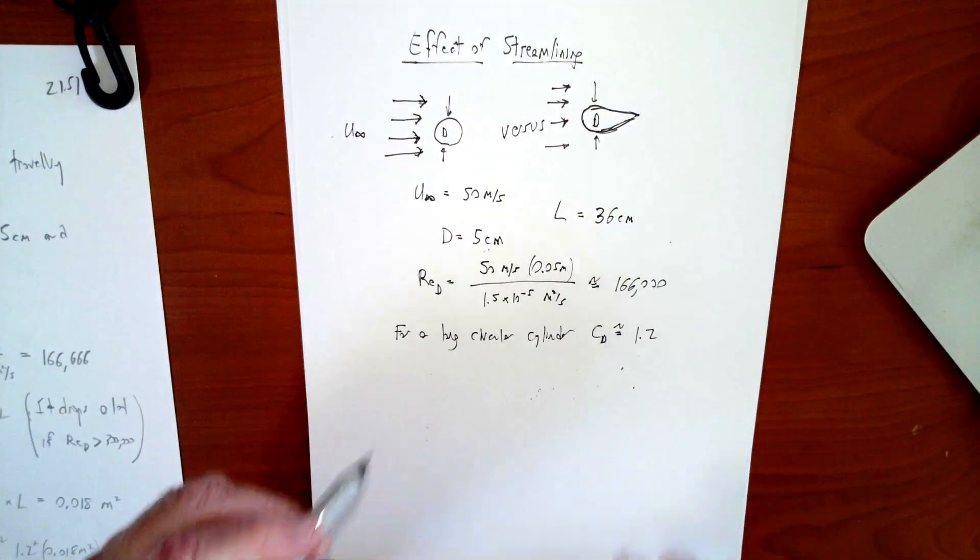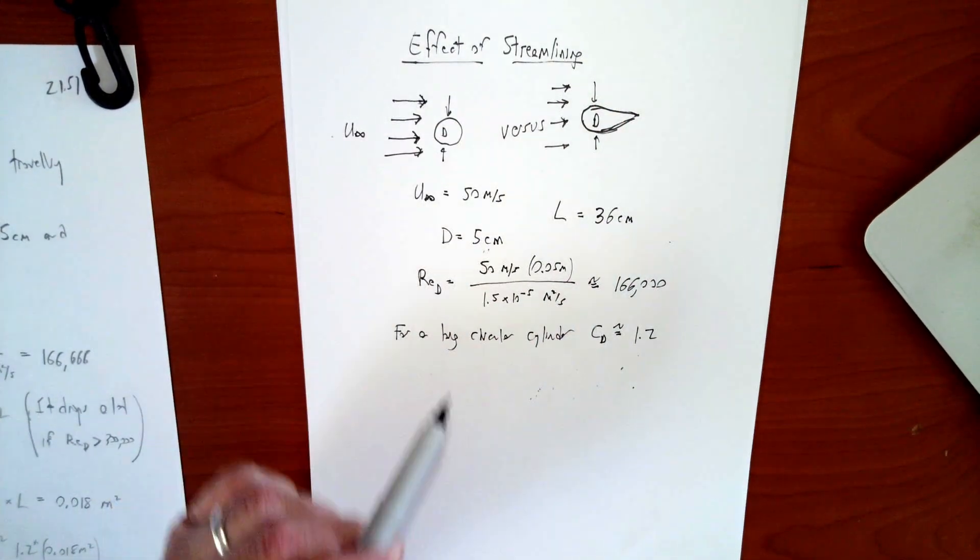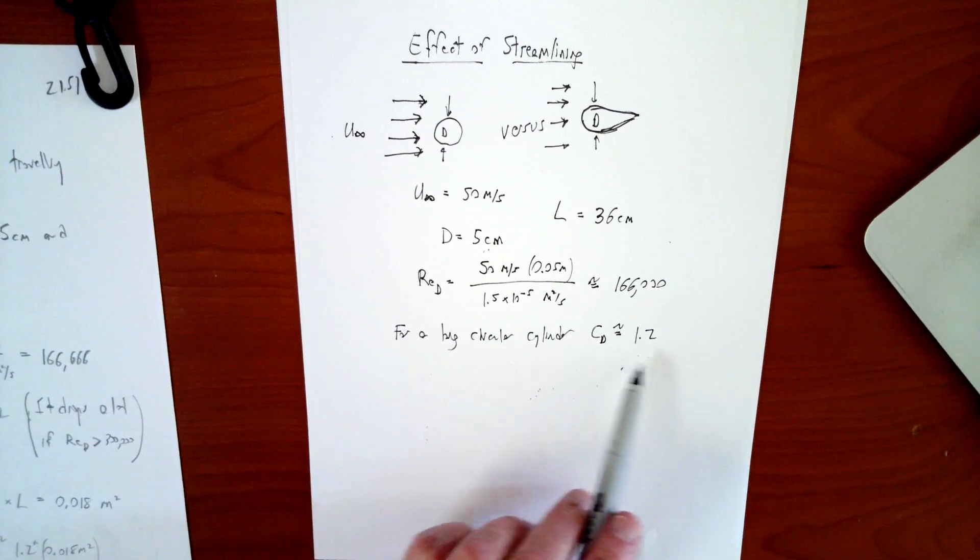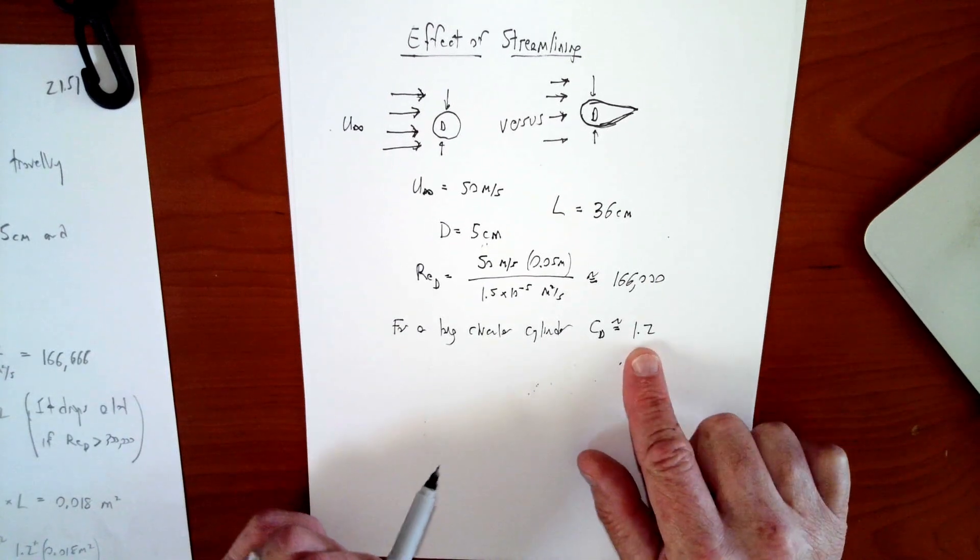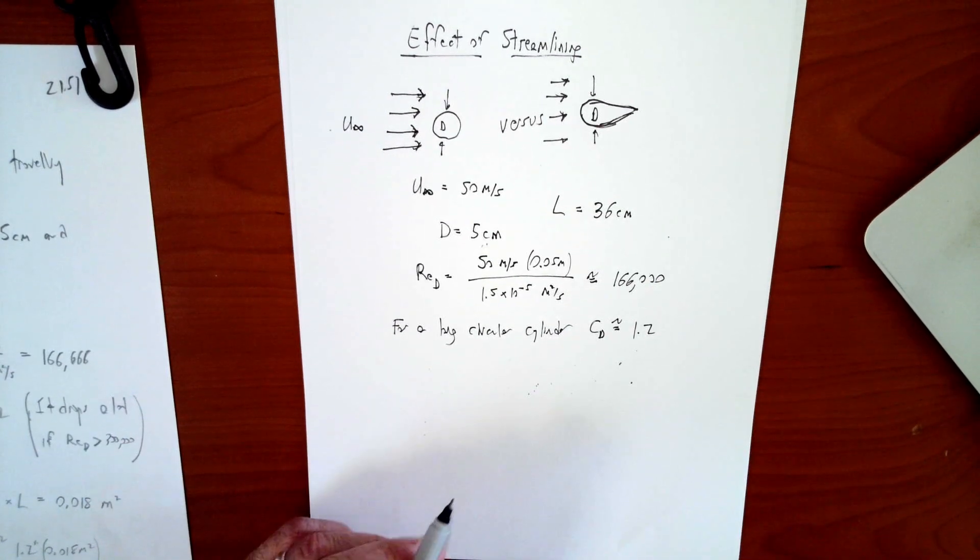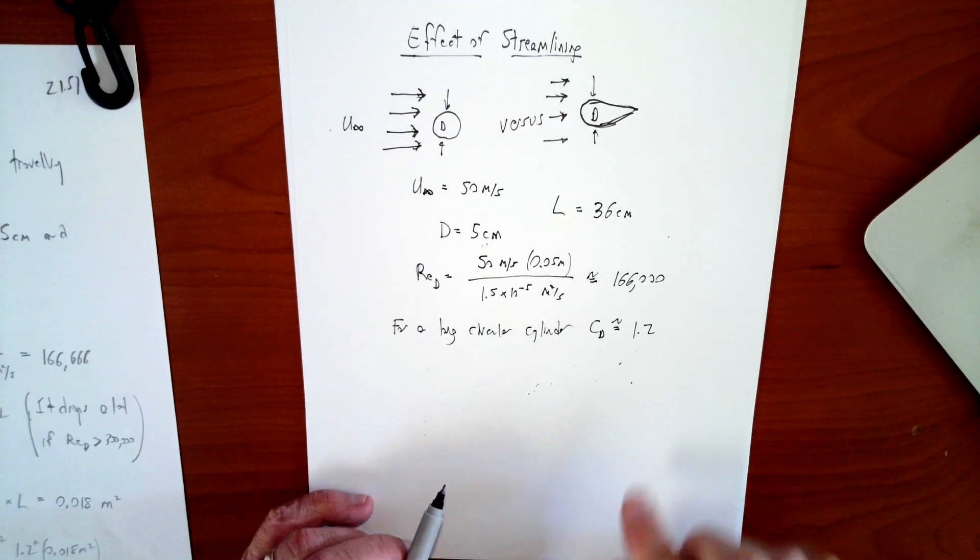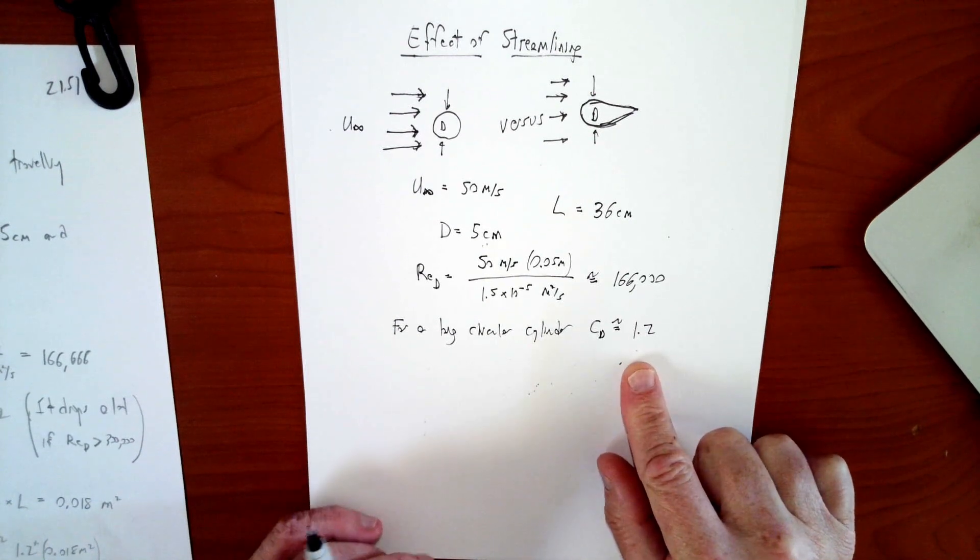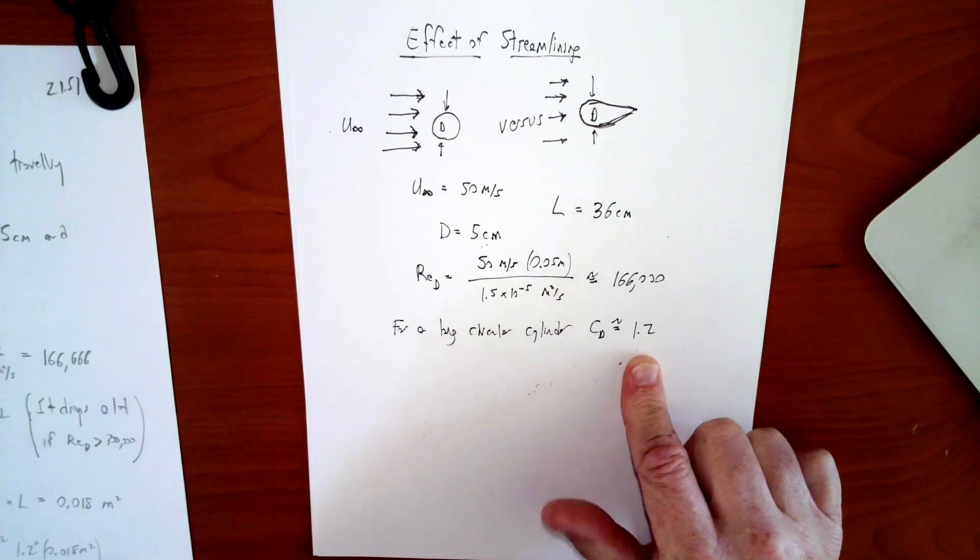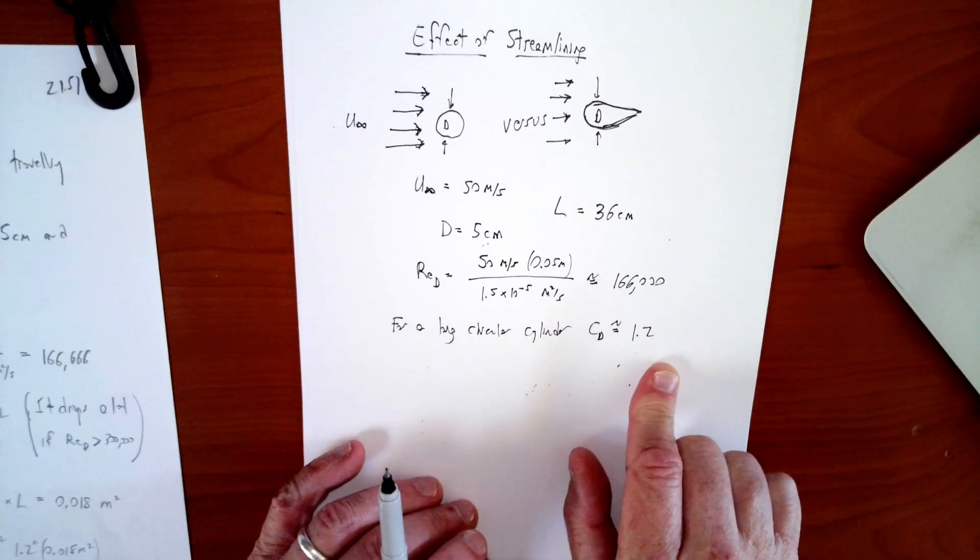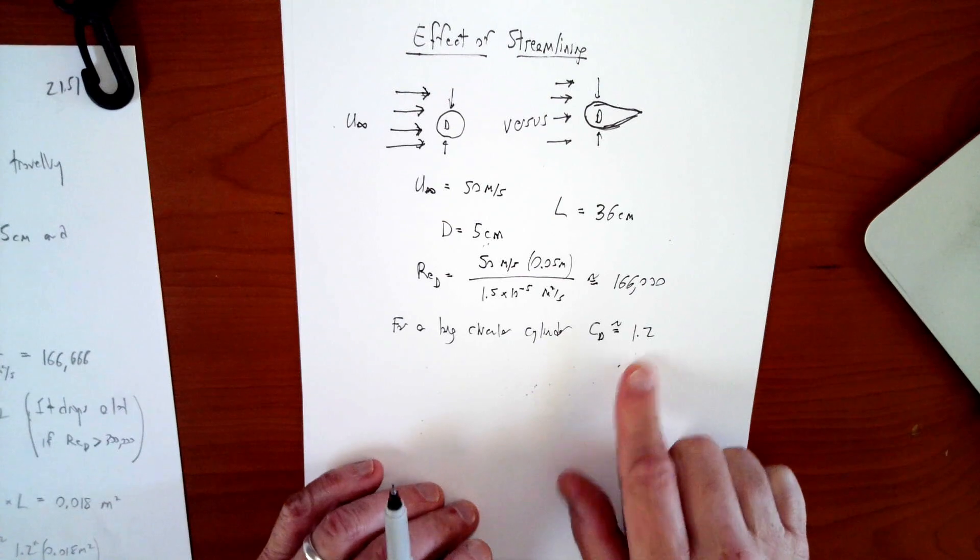CD for that circular cylinder is about 1.2 at this Reynolds number. I should have said we want to give this thing a length as well. I'm going to give it a length of 36 centimeters. That's my length, so it's relatively long relative to its diameter. This CD is 1.2 for this. We expect this CD is a little higher than the one we saw earlier. If you look back in your notes, this CD actually drops a lot if the Reynolds number goes above about 300,000. So that's just interesting. So the CD does depend on all kinds of things, but right at this particular Reynolds number, it's about 1.2.